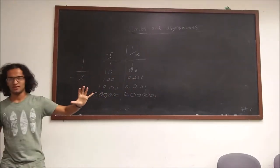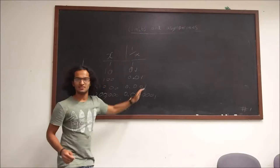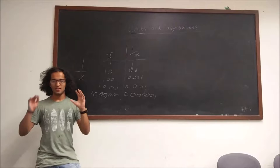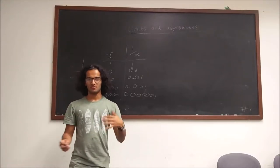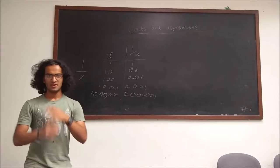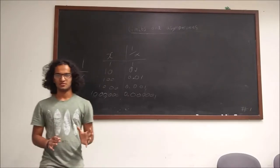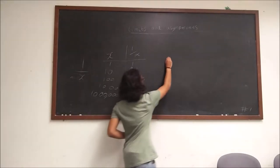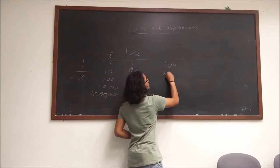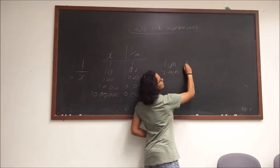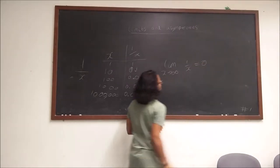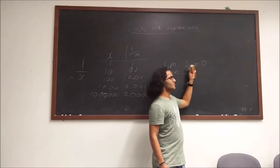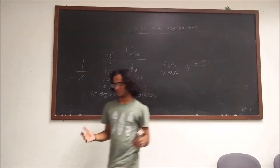We can see here quite clearly that as x increases, 1 over x tends to 0, but it never actually reaches 0. It gets very, very close but never reaches it. It's kind of like a cap on the number — it'll never reach there, never pass it, just get very close to it.